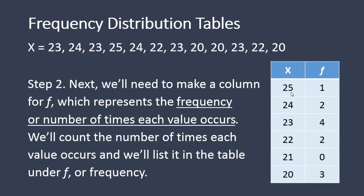Notice for 25 we have 1 as I had indicated. So this f indicates the frequency or how many of a given value occurred in our data set. We have 1 value of 25. We have 2 values of 24. We have 4 values of 23, let's check that, 1, 2, 3, 4.